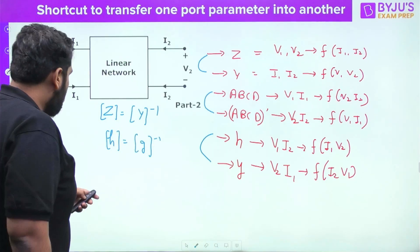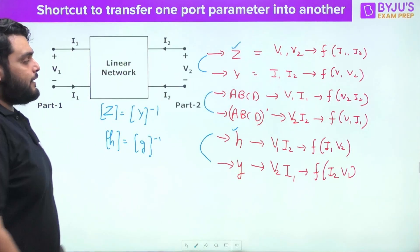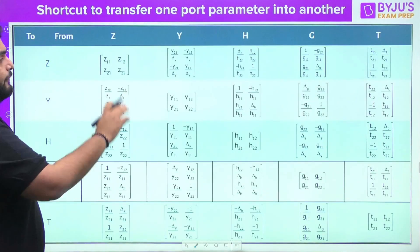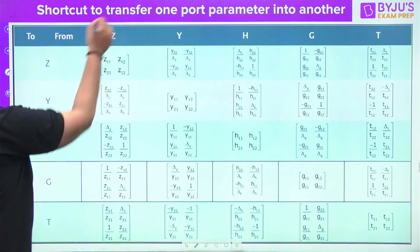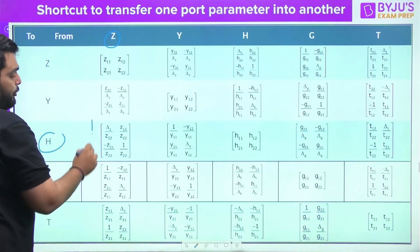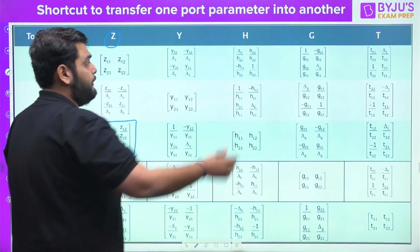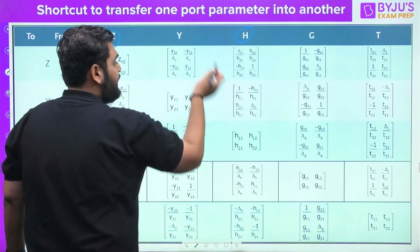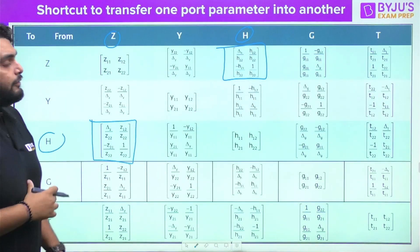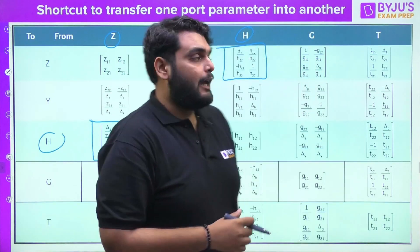The question is: what if I need to transfer from Z to H parameter, which are not linked by the inverse function? To do this we have so many formulas. For example, to transfer Z parameter into H parameter, you have to remember a specific formula. And to transfer H parameter into Z parameter, you have to remember yet another set of formulas. Remembering all these formulas is a difficult task, so I'm going to tell you the shortcut.